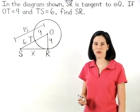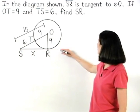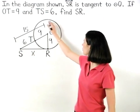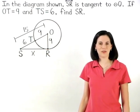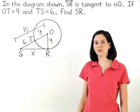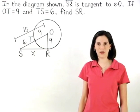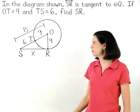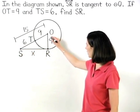To find the value of X, notice that we're given that line SR is tangent to circle O. And remember that if a line is tangent to a circle, then the line is perpendicular to the radius of the circle drawn to the point of tangency. So we know that line SR is perpendicular to radius OR.